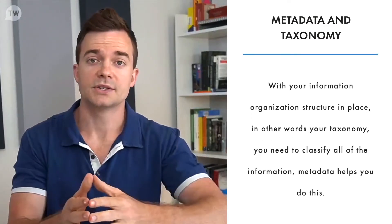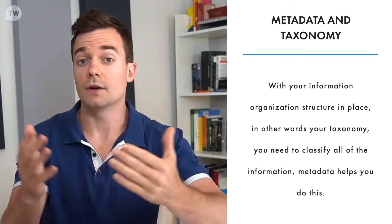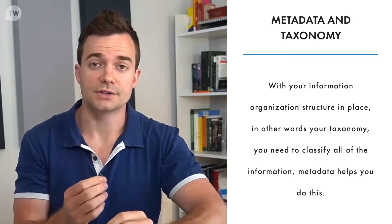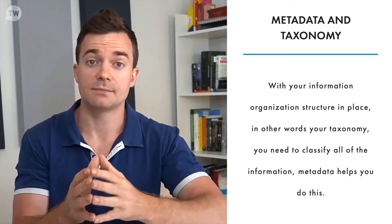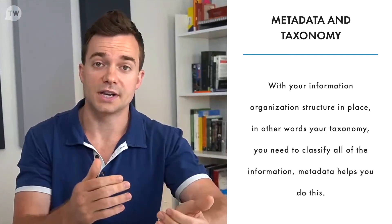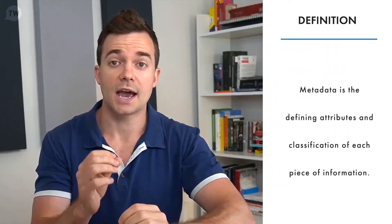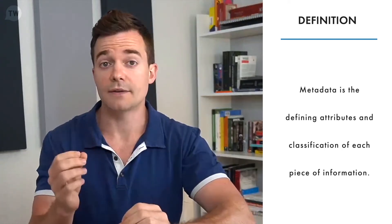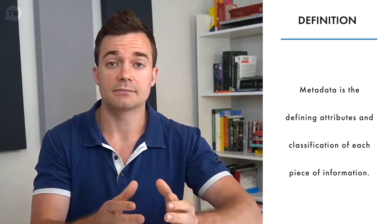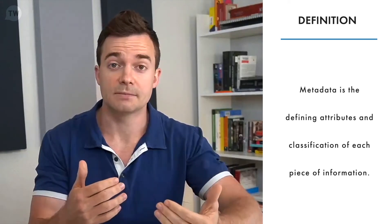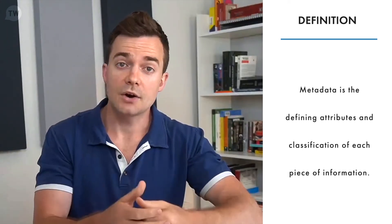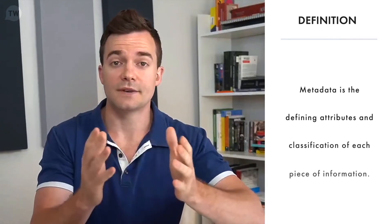In other words, with your taxonomy in place, you then need to classify all the information, and metadata helps you do this. The taxonomy itself simply provides an architecture for the organization but doesn't actually organize it until all information includes metadata. Metadata is the defining attributes and classification of each piece of information, which is why it is leveraged by search engines to understand the content you write and publish on the web. In code, metadata often looks like a list of attributes with associated values indicating the classification of that item.